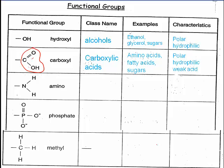The third type of functional group is the amino group, and it's almost immediately recognizable because of the nitrogen — it's a nitrogen with two hydrogens bonded to it. These are called the amines, and you tend to find them only in amino acids. They are also polar and hydrophilic, and they form weak bases.